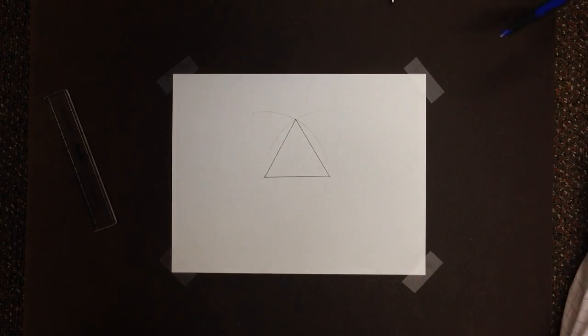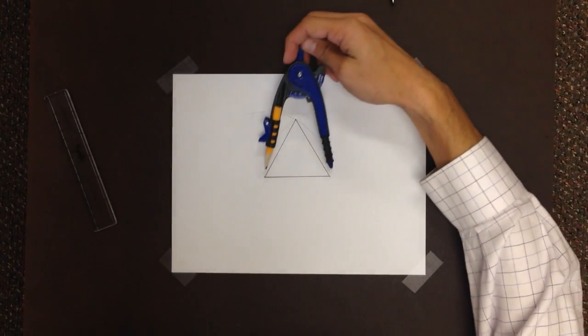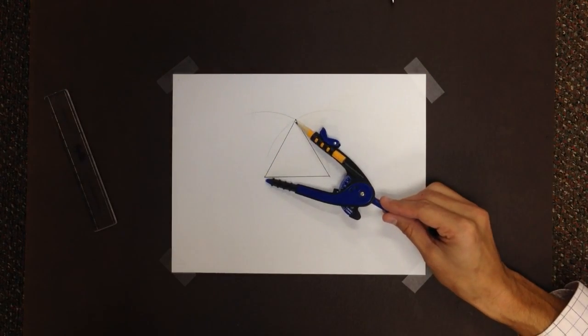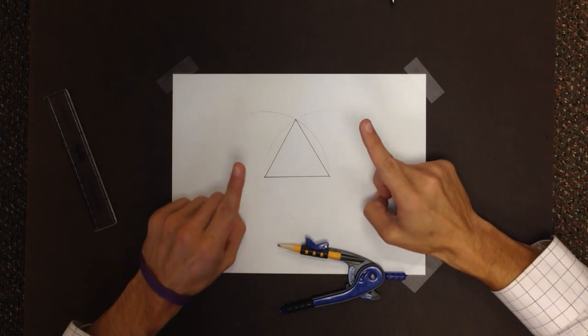Boom. And now just by checking our compass, that side is the same as that side is the same as that side. That, ladies and gentlemen, is an equilateral triangle.